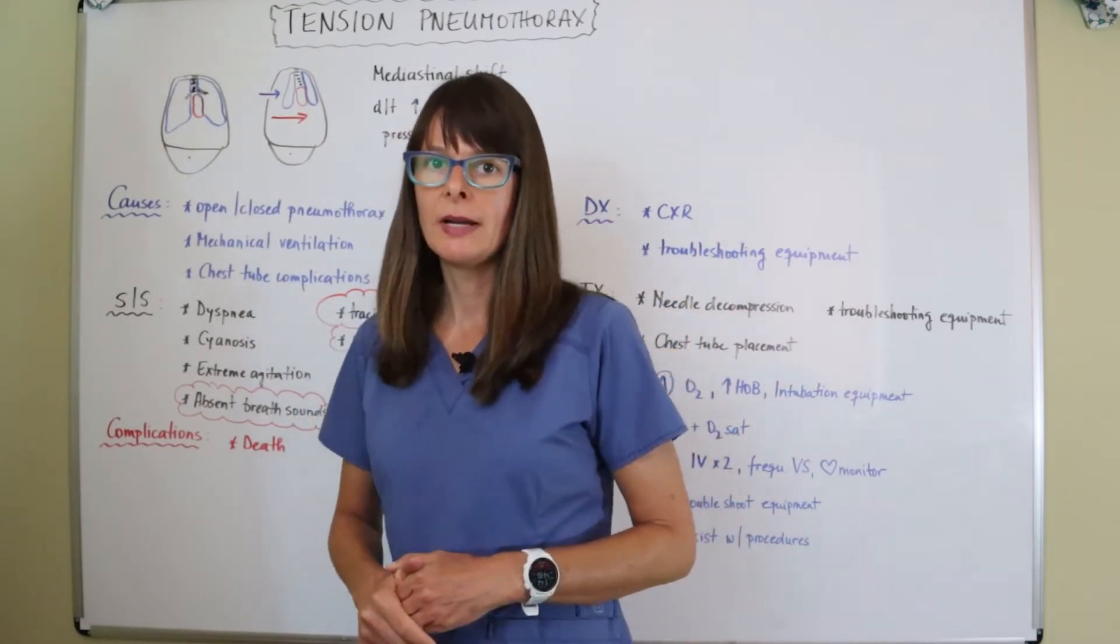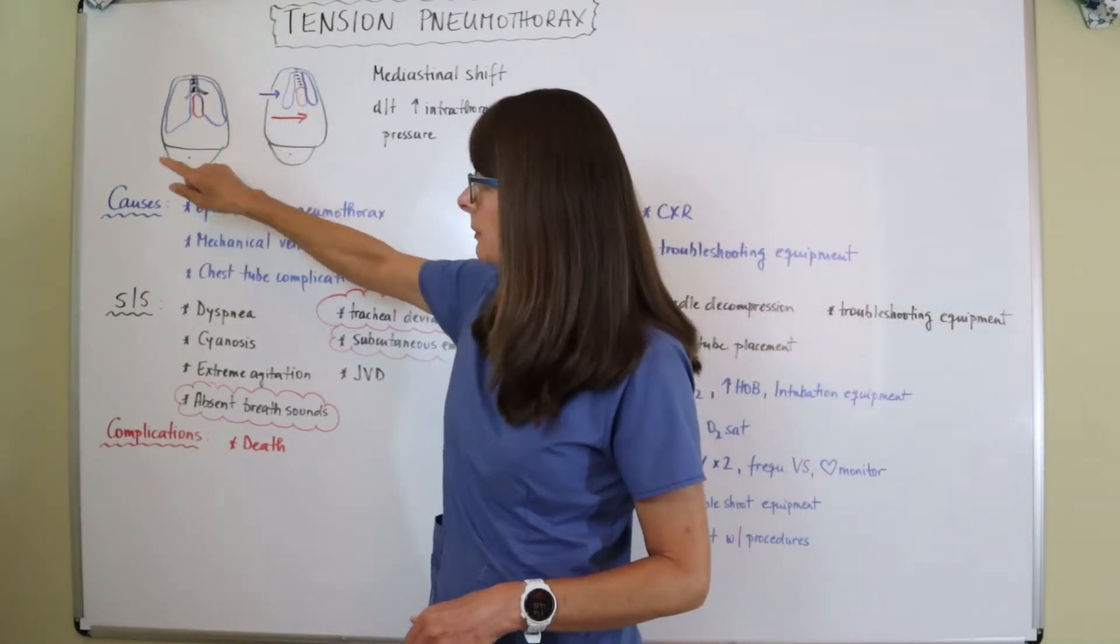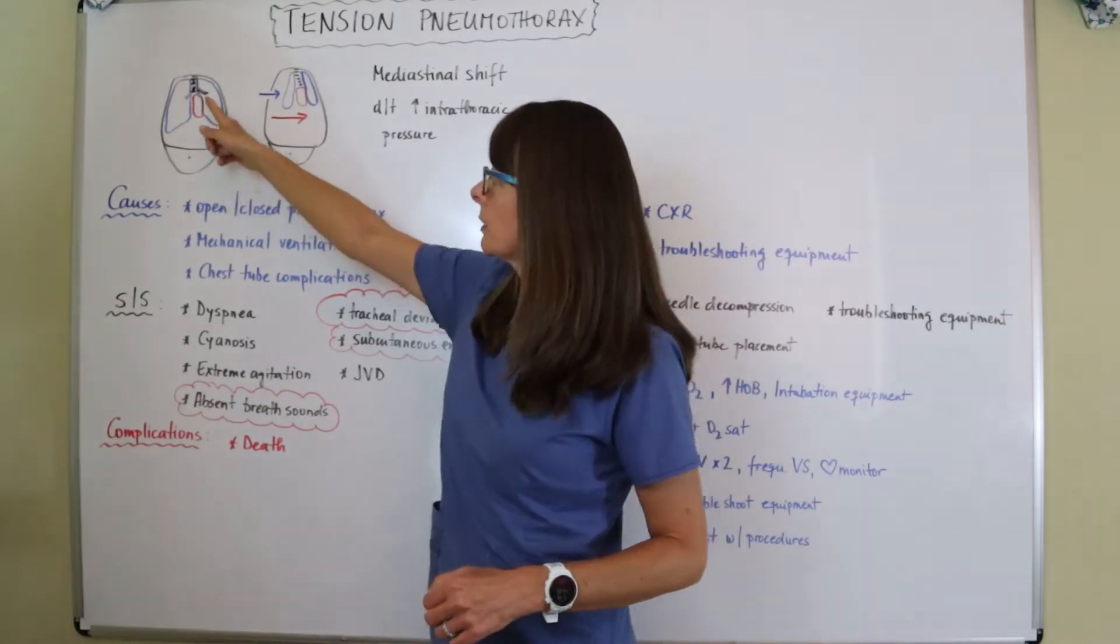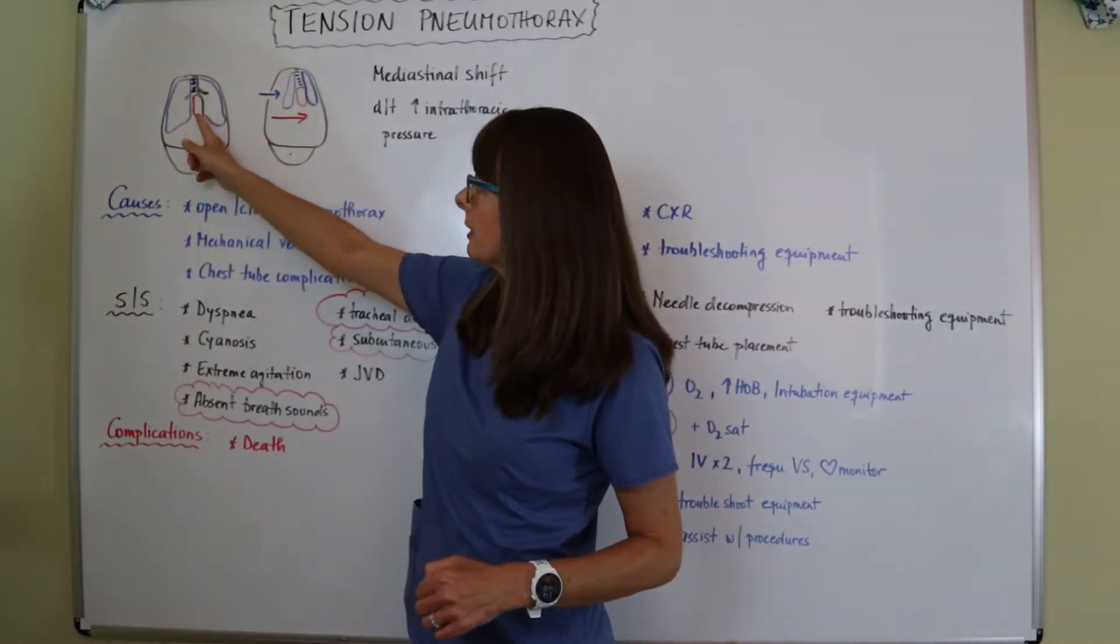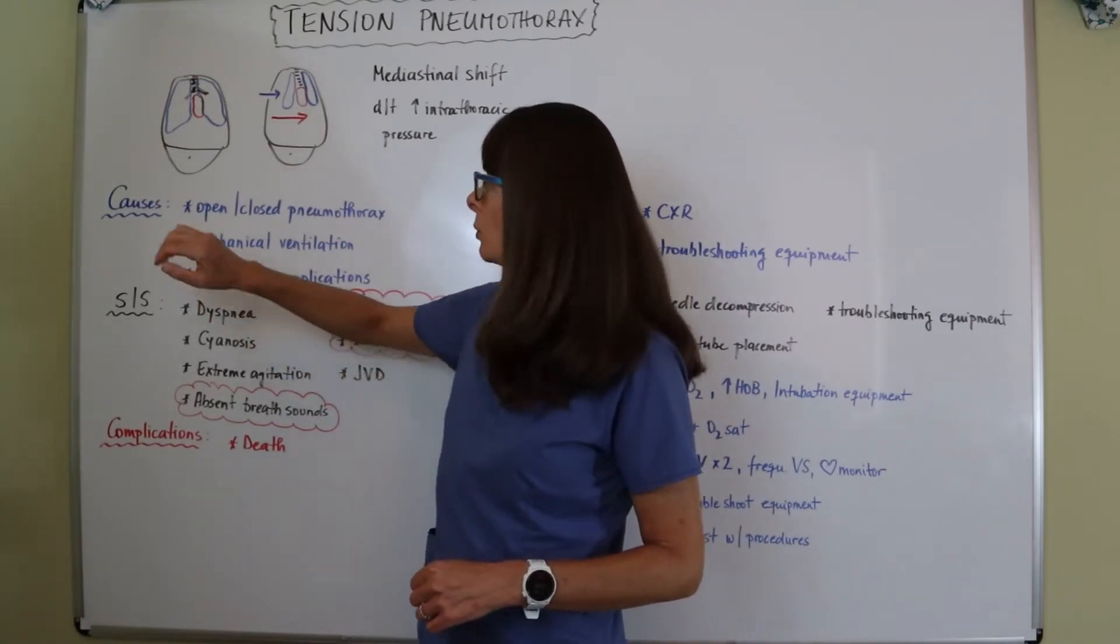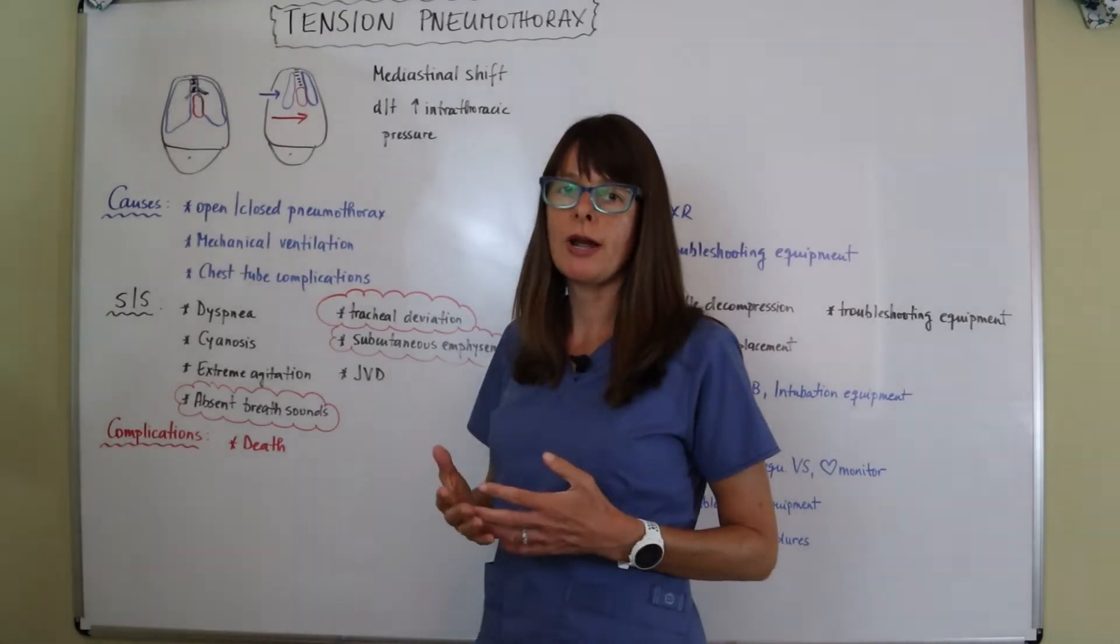So I've drawn out here a torso, and down here is the belly with the belly button. Over here we have the normal anatomy with the trachea at the midline, the heart in red, and both lungs on each side in blue. So this is normal anatomy.